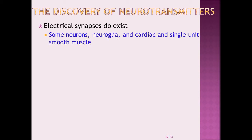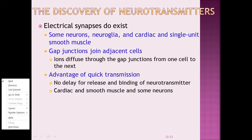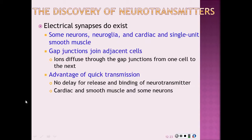Electrical synapses do exist. Some neurons, neuroglia, cardiac, and single-unit smooth muscle have electrical synapses. They have gap junctions that join adjacent cells, and ions diffuse through the gap junctions from one cell to the next. The advantage is quick transmission with no delay for release and binding of the neurotransmitter. Examples include cardiac and smooth muscle and some neurons.